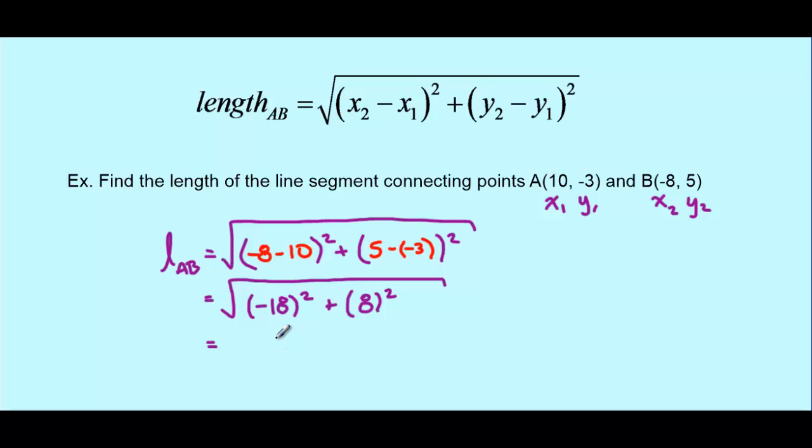Remember before we said that one of the legs ended up being negative. In this case, this leg is negative. Negative 18. The reason why that's not an issue is because we're going to be squaring that value. Any negative or positive number squared will end up being positive. So the fact that we have negative 18 won't make a difference when we square it.